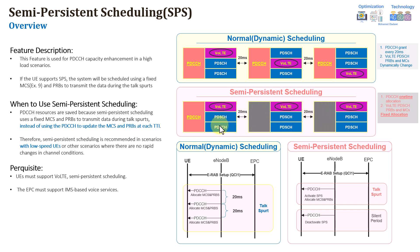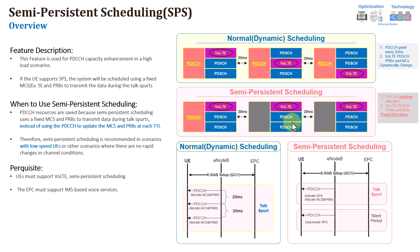So the same resources and location for PRBs and MCS would be used all over the call. This means that every 20 milliseconds, there will be no need to have allocation for PDCCH resources. So this will save the PDCCH and will have a great improvement in the PDCCH allocation, as you can see here. But the main point is that the allocation or scheduling information for the MCS and PRBs will remain the same all over the call.